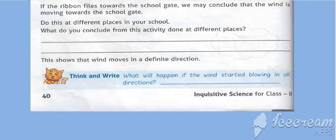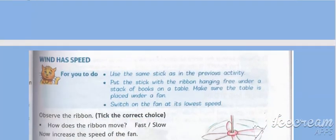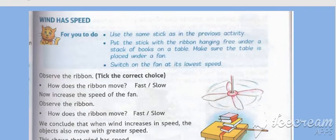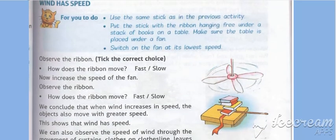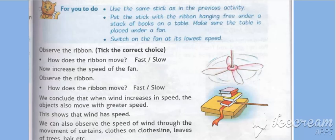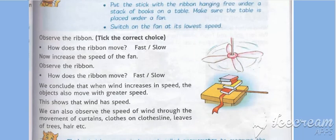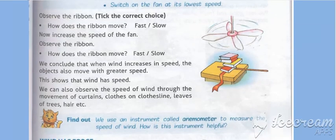What will happen if the wind started blowing in all directions? You have to think and write. Wind has speed. How does the ribbon move — fast or slow? Now increase the speed of the fan and observe the ribbon. We conclude that when wind increases in speed, the object also moves with greater speed. We can observe the speed of wind through the movement of curtains, clothes on a clothes line, leaves of trees, hair, etc.